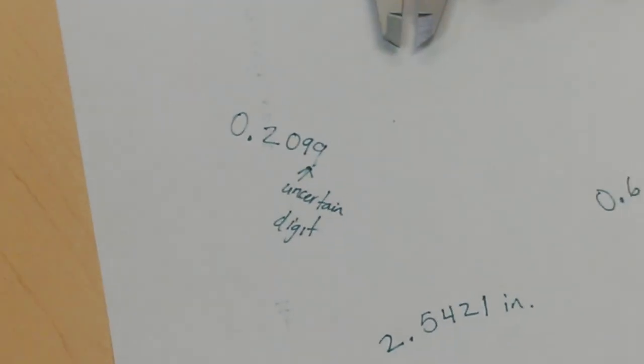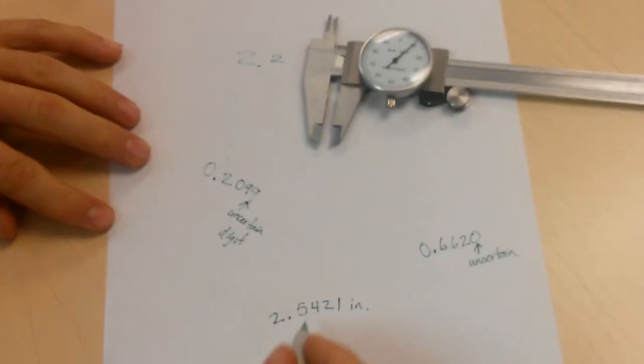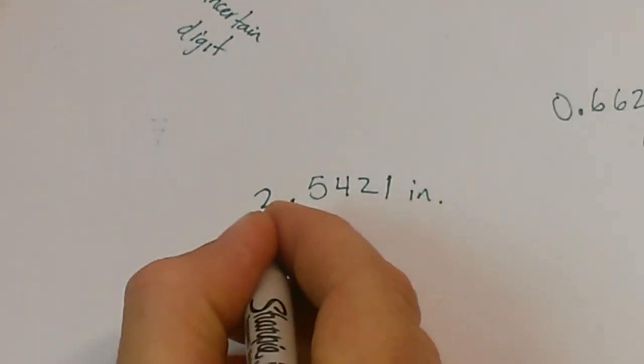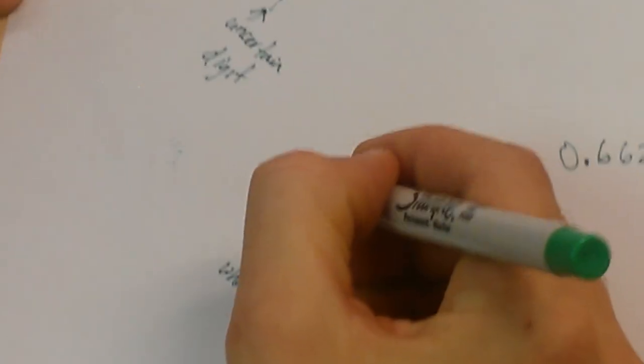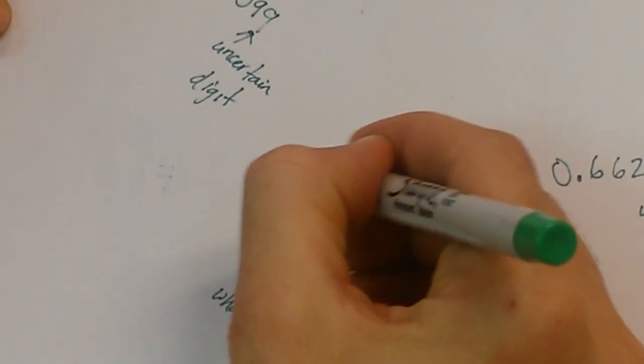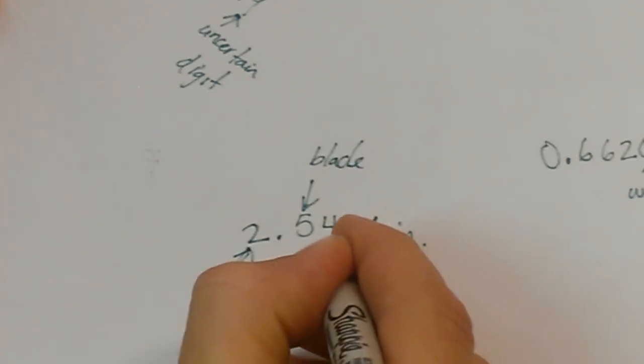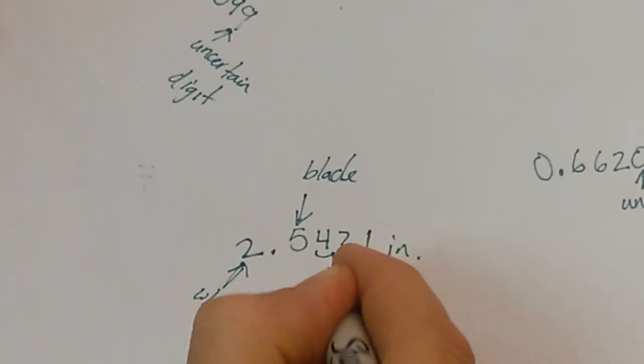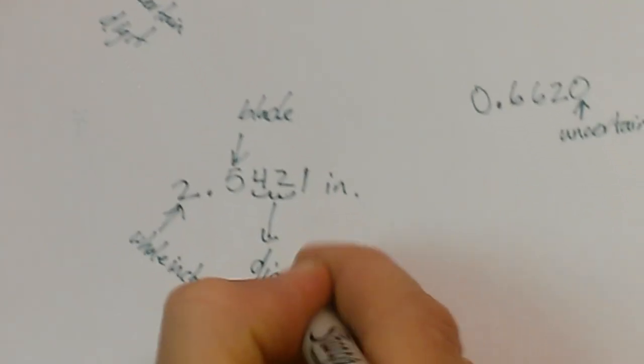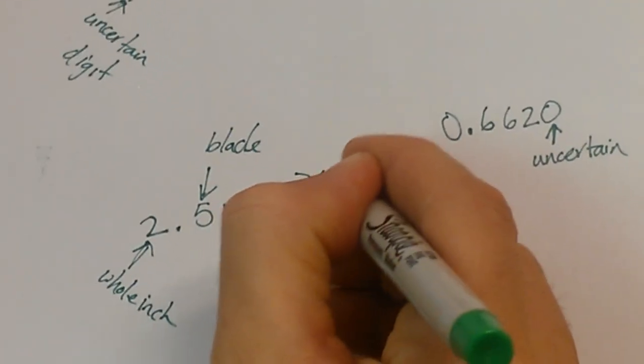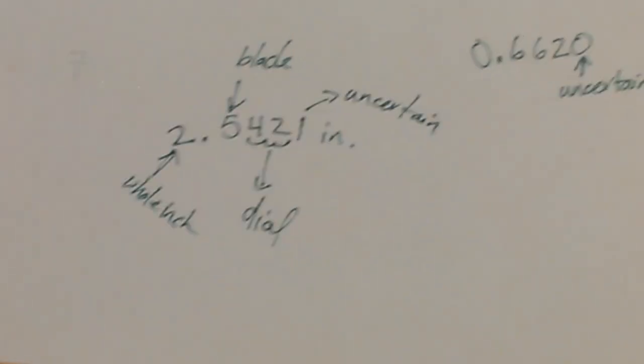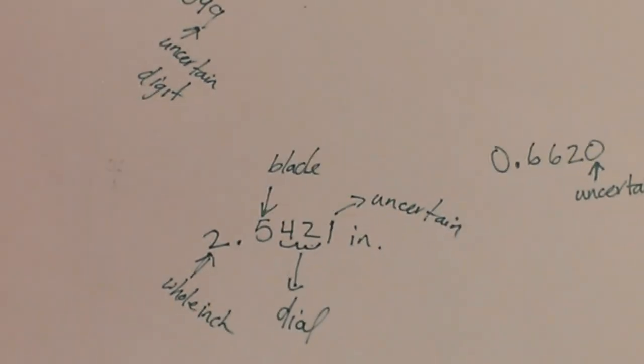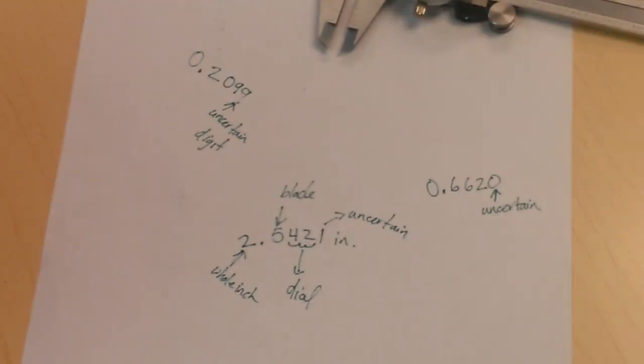So there you go that's how you measure with the dial caliper. Let's take a look at this one. This is the whole number. The whole inch. This one right here the tenth comes from the blade. These two right here come from the dial. And this last one is uncertain. So go ahead and practice with the worksheet that you have and we'll see how it goes. Thank you.